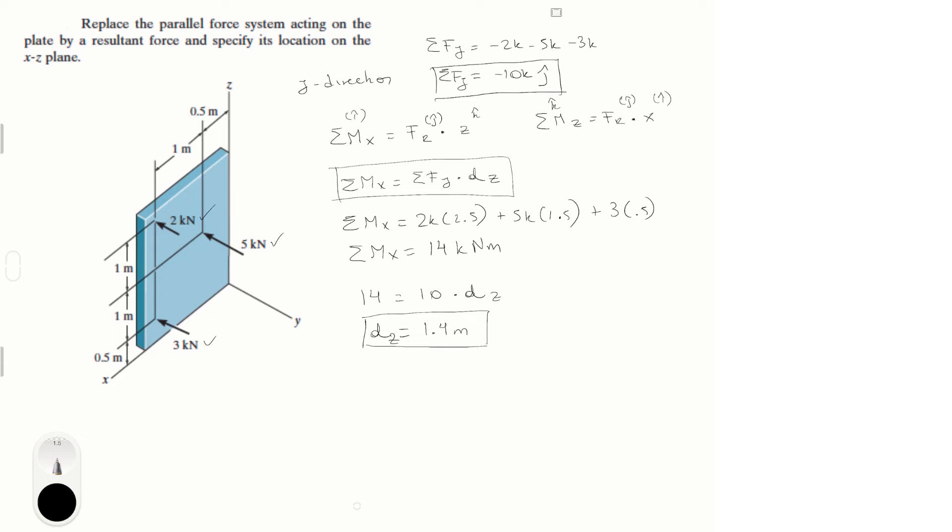Now we're going to do basically the same thing, but for the z, which is sum of the moments in the z is equal to 2k times 1.5, which is this force again, but the distance between it and the z axis, plus 5 times 0.5, which is this one again, but the distance with the z axis, which is 0.5,